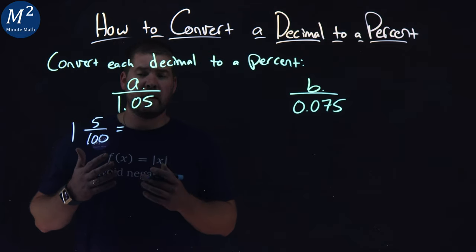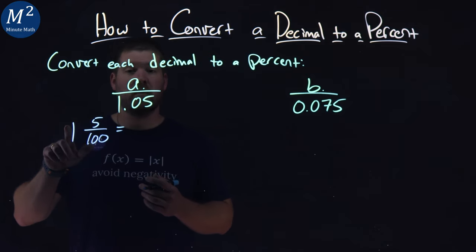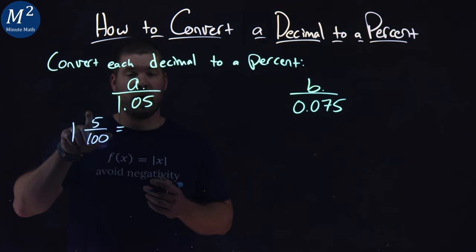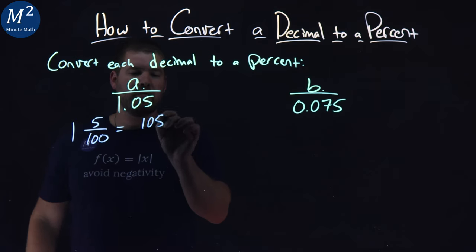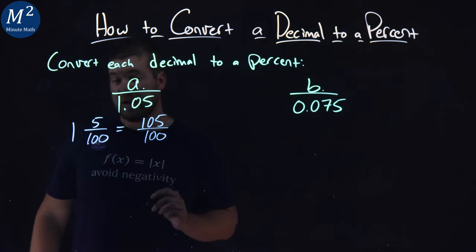If we want to write this as an improper fraction, we take the 100, multiply it by the 1, got 100, add the 5, and we have 105 over 100.